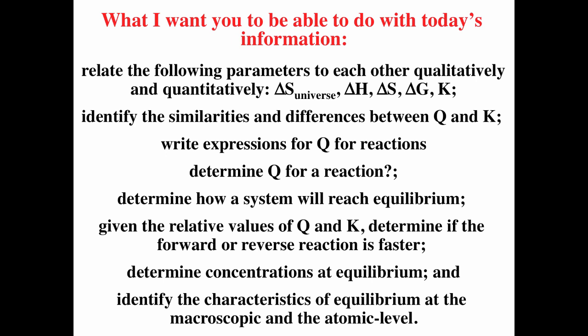You should identify the similarities and differences between Q and K: Q is the reaction quotient, K is the equilibrium constant. You should write expressions for Q for a reaction, determine how a system will reach equilibrium — whether it goes toward more products or more reactants given the relative values of Q and K — determine which reaction direction is faster, determine concentrations at equilibrium, and identify the characteristics of equilibrium at both the macroscopic and atomic levels.